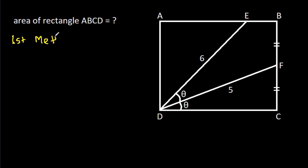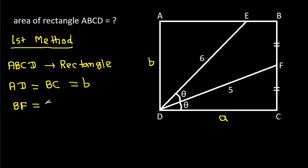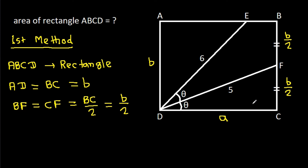For the first method, suppose CD is A and AD is B. We know that ABCD is a rectangle, which means AD is equal to BC. AD is B and we have BF equal to CF, so BF will be BC over 2, that is B over 2, and CF is also B over 2. The angles at the corners are 90 degrees.